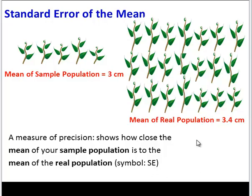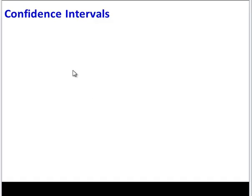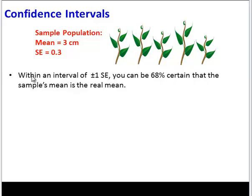We abbreviate standard error with SE. The formula is the standard deviation divided by the square root of the sample size. N is the number of plants in your sample — in this case, N would be 5. Calculating standard error gives us something called confidence intervals. Let's say our sample population has a mean of 3 centimeters and a standard error calculated to be 0.3. Within an interval of one standard error — in other words, within an interval of 0.3 — you can be 68% certain that your sample's mean is the real mean.